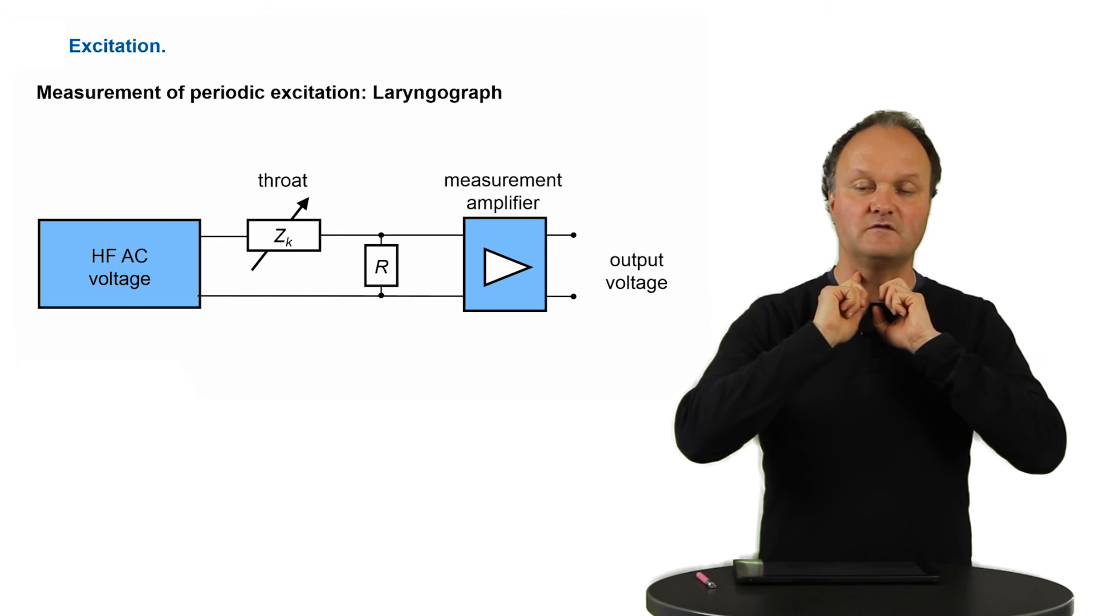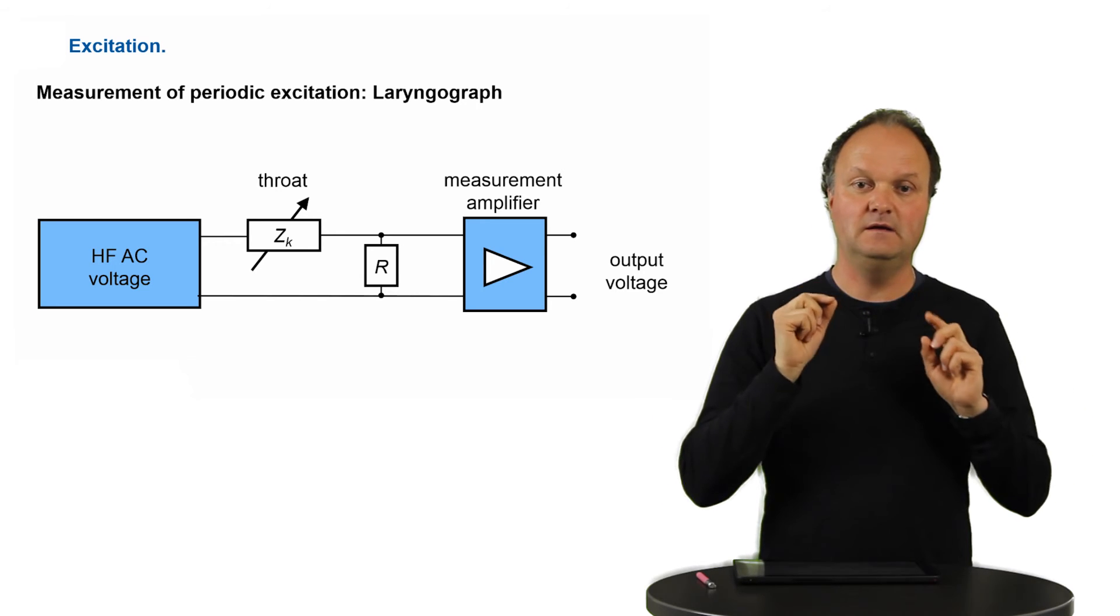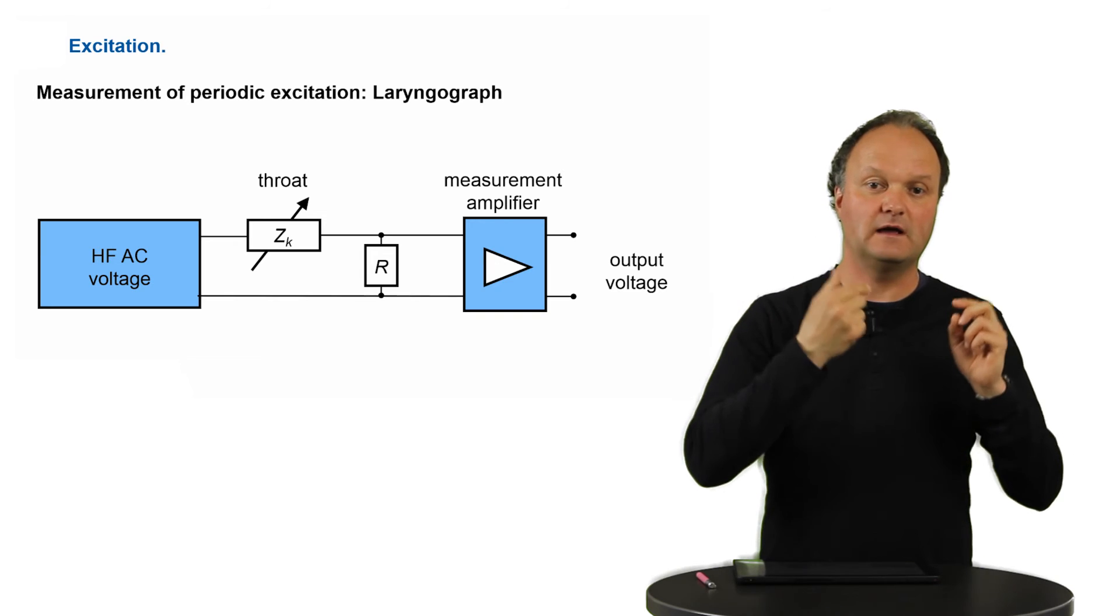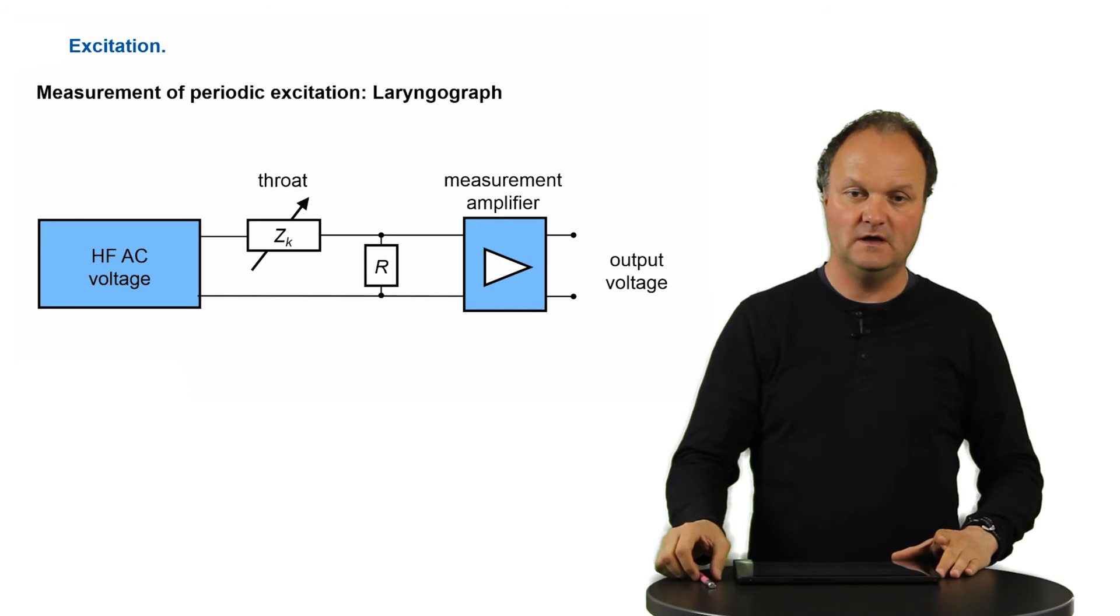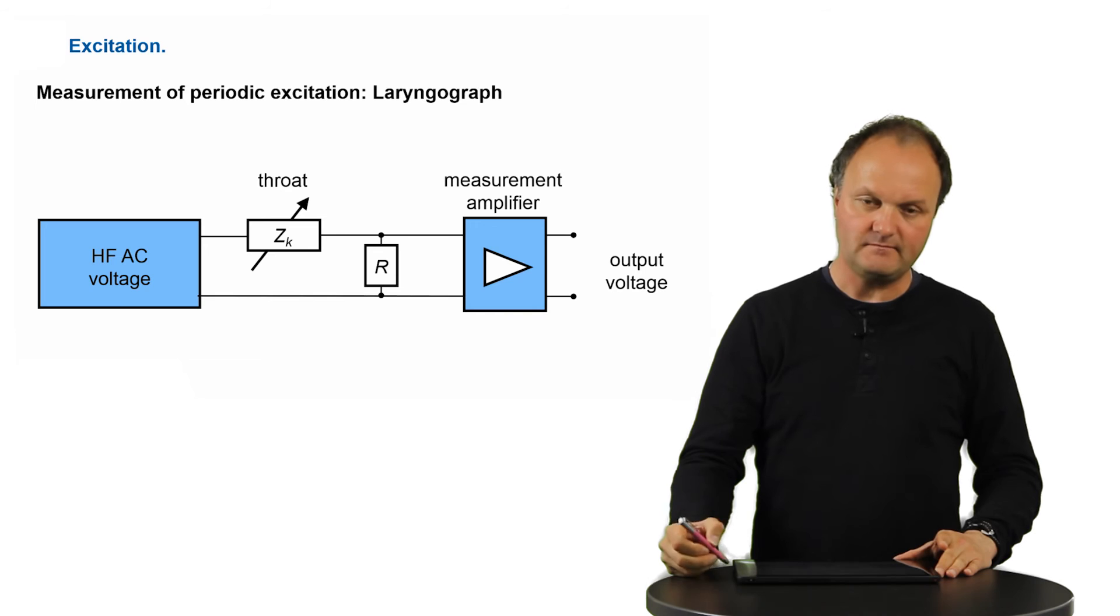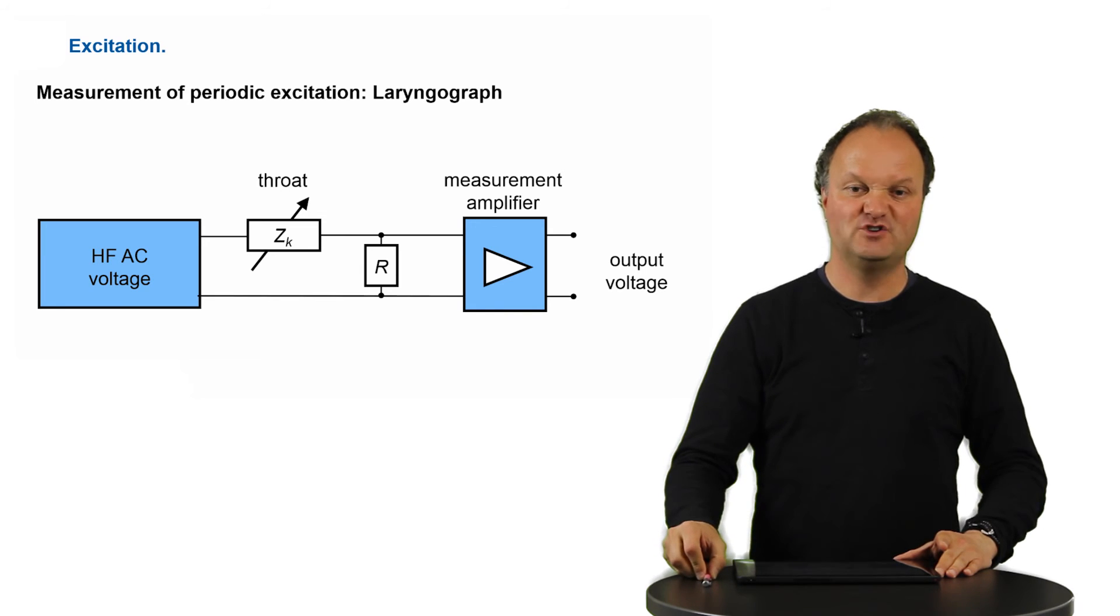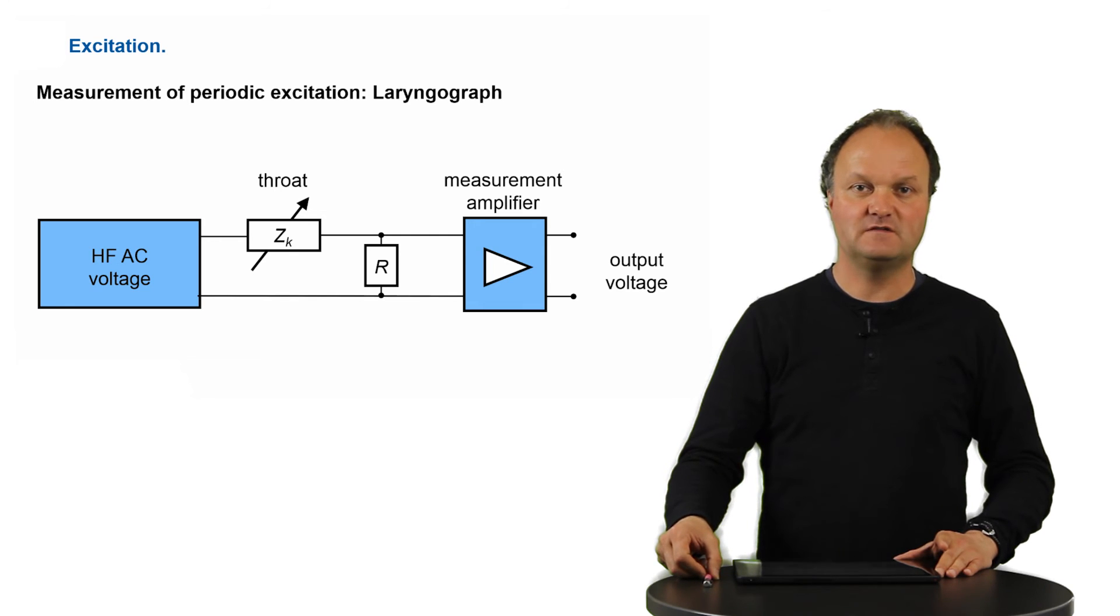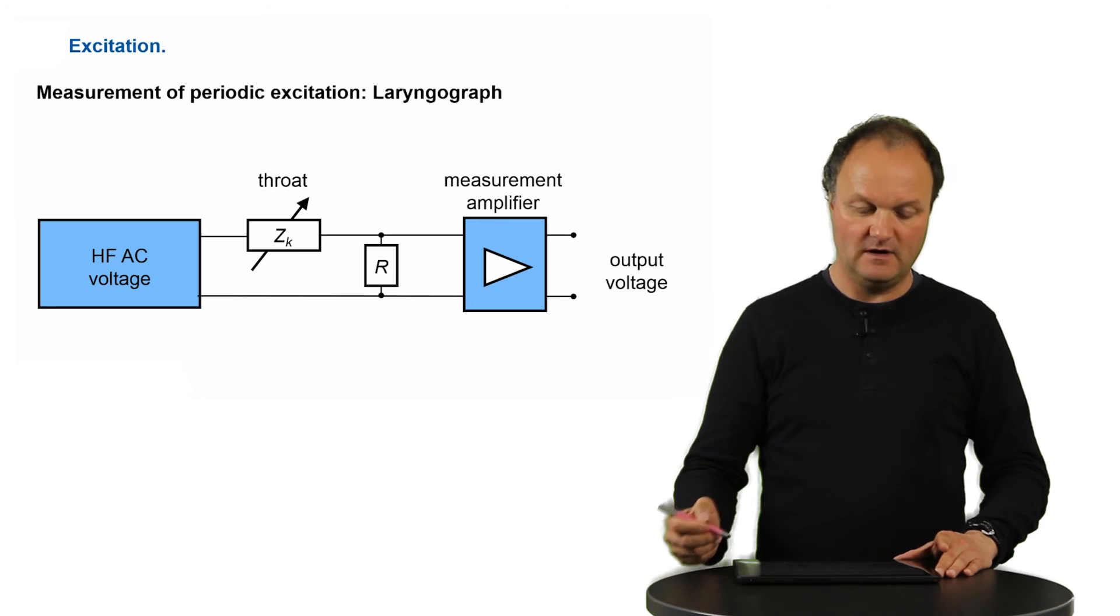But if the vocal folds are closed, we have body mass in between. And that means that we have liquid like water, which is a relatively good conductor. We can measure this with a machine which is called the laryngograph. And you will see more illustrations on this laryngograph machine in the material of this course.